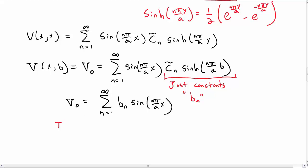So then we have V_0 is the sum from n equal 1 to infinity b_n sin(n pi over a x). Oh wait, that looks a lot like a Fourier series, and it's a Fourier series. We just need to solve for the b_n.